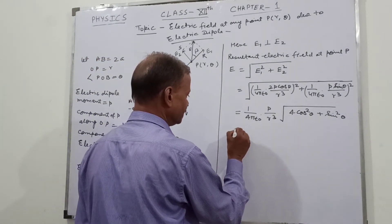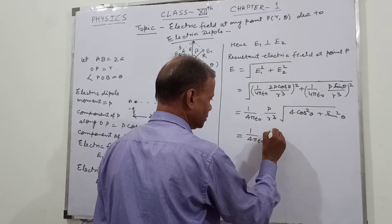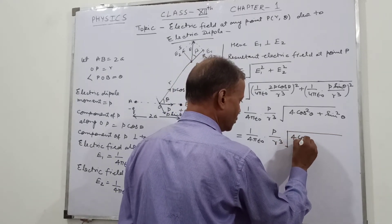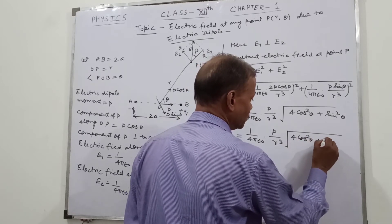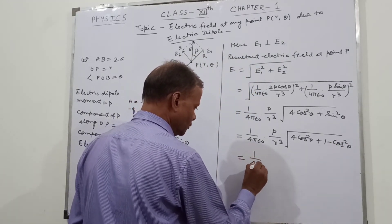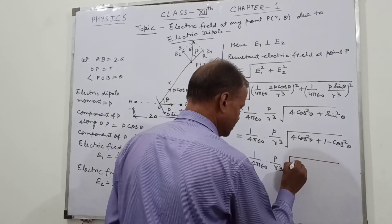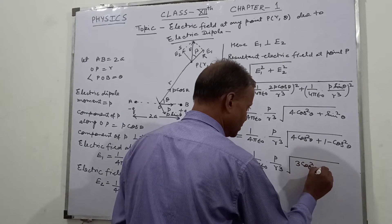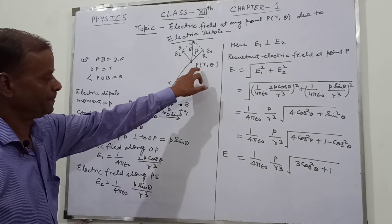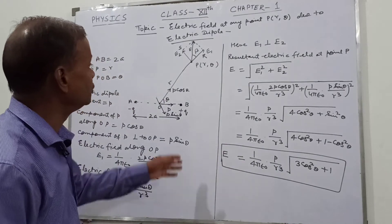So this is equal to 1/(4π epsilon_0) into P upon R cubed into the square root of 4 cos² theta plus sin² theta. Substituting sin² theta = 1 − cos² theta, this simplifies to 1/(4π epsilon_0) × P/R³ × square root of (3 cos² theta + 1). This is the net electric field E at the point P(r, θ).